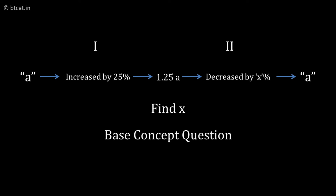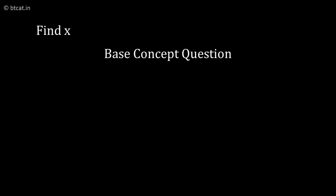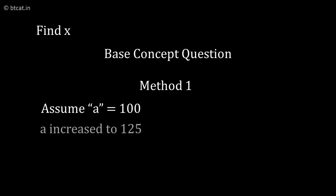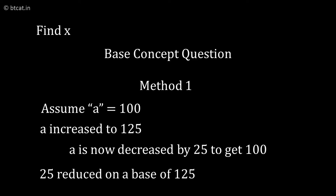There are various ways of solving. One method can be assume the number as 100. So if I take the number as 100, the new number becomes 125. And now coming back from 125 to 100, I have to decrease the number by 25 on a base of 125.